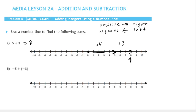Let's look at the next problem. Here we're starting with negative 5. So I'm going to start at 0 and move 5 to the left, which takes us here — to the point negative 5.